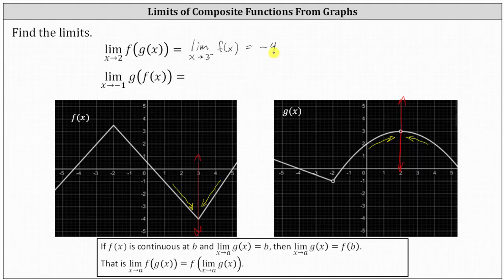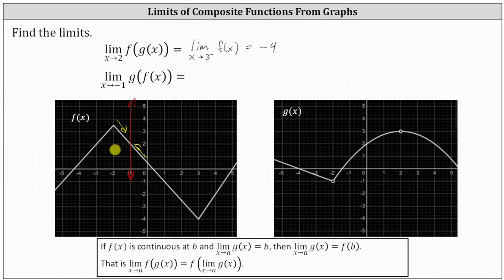Now for the second example: the limit as x approaches negative one of g(f(x)). We begin by finding the limit as x approaches negative one of the inner function f(x). Approaching x equals negative one from the left and the right, we see that in both cases we're approaching the y-value of positive two — from above and below. Therefore, the limit as x approaches negative one of g(f(x)) equals the limit as x approaches two of the outer function g(x).